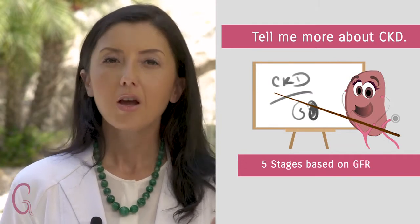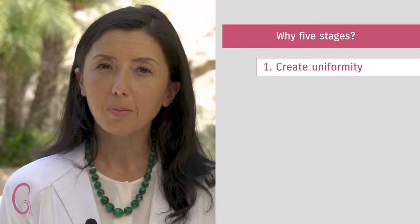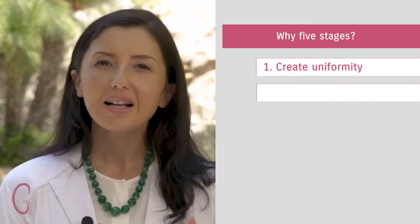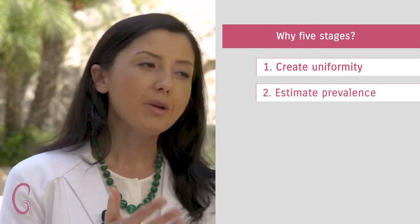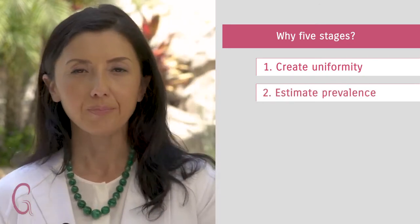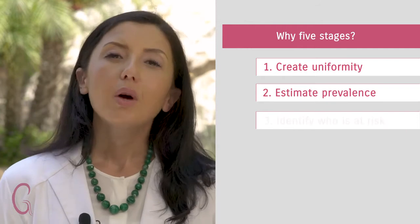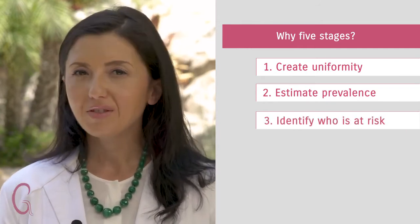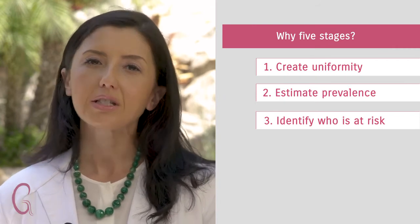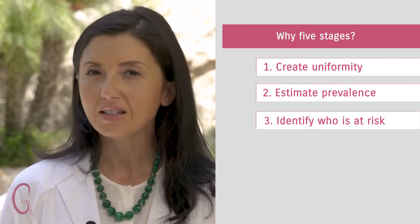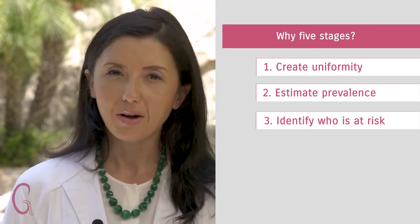Chronic kidney disease is divided into five stages depending upon your GFR. We've done this for three reasons: one, to create uniformity amongst healthcare providers so we know what stage each person is in; two, to estimate disease prevalence — how many people are in stage one, two, or three; and three, to identify who's at risk for developing complications. The higher stage of CKD you have, the more at risk you are for developing complications such as high potassium or accumulating acid in your body.